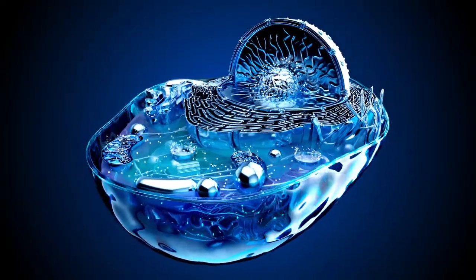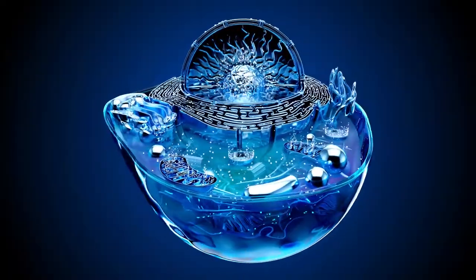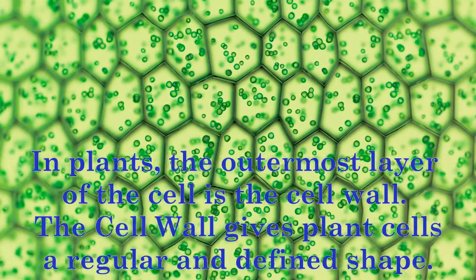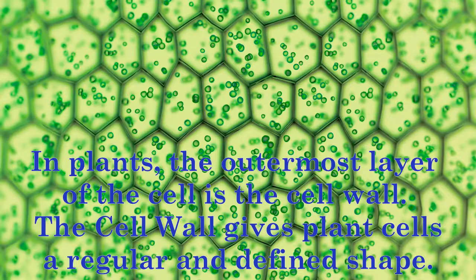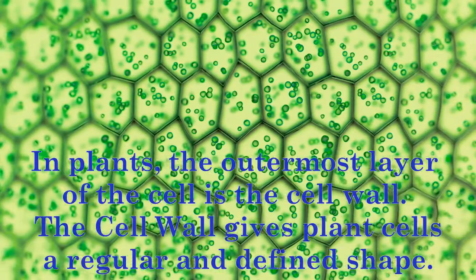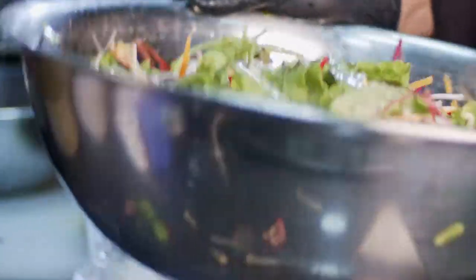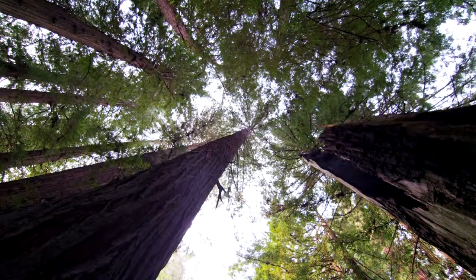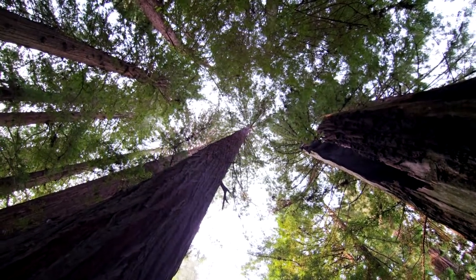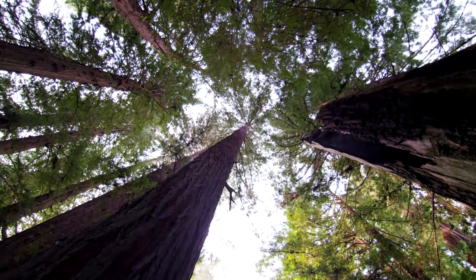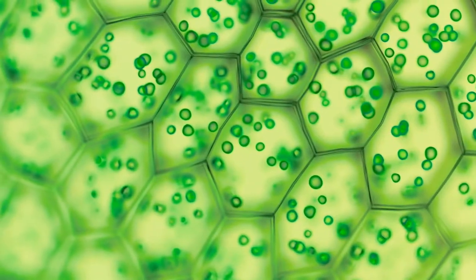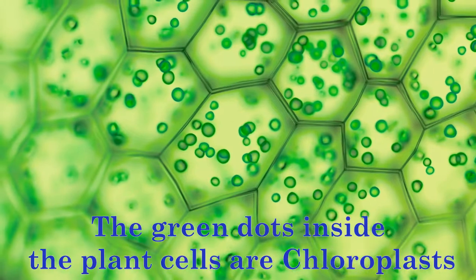The cell membrane is the outermost layer of most cells and is responsible for maintaining the cell's shape. However, plant cells have a unique feature called the cell wall, which serves as their outermost layer instead. Cell walls provide an additional layer of support and protection, adding strength to the cell. This is why plants like carrots, lettuce, and onions feel tougher and have a crunch. In trees, plant cells harden and allow the formation of wood. Without the cell wall, plants would not be able to grow to incredible heights.